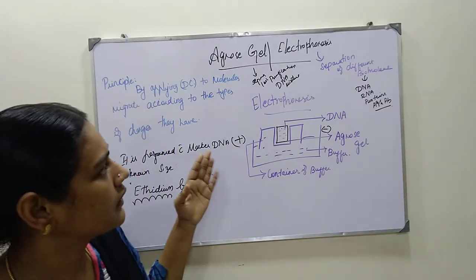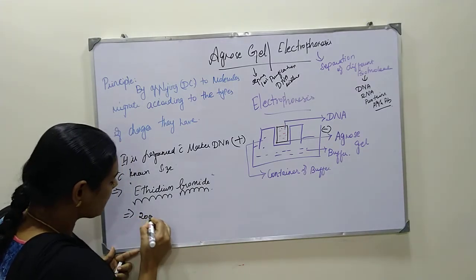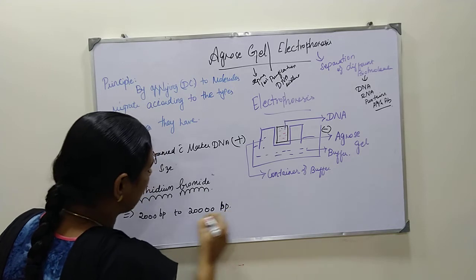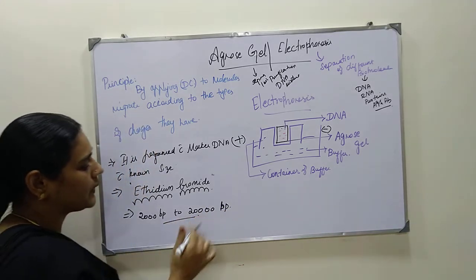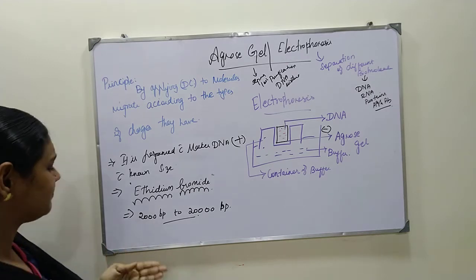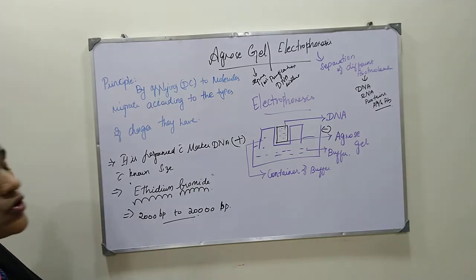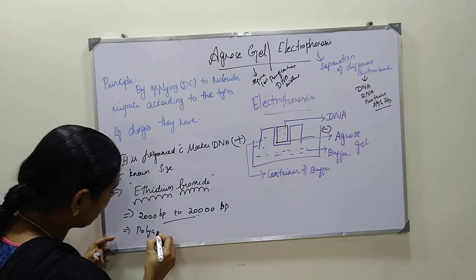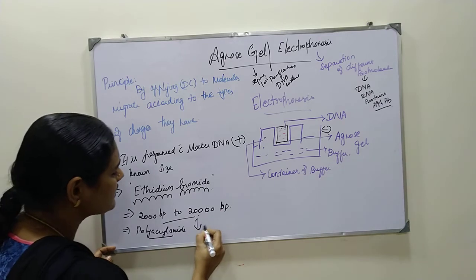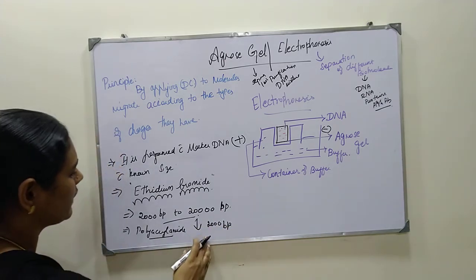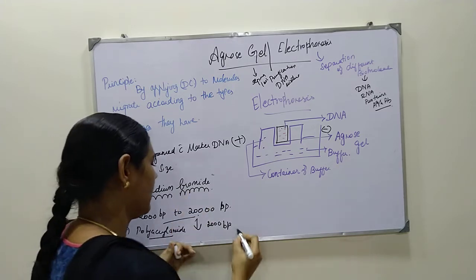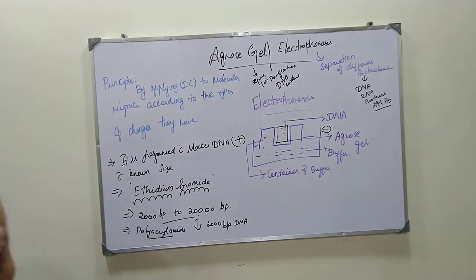This agarose gel electrophoresis technique is used to separate DNA from 2000 base pairs to 20,000 base pairs. We can identify the DNA from the 2000 base pair range to the 20,000 base pair range using this method. If the DNA fragment is below 2000 base pairs, for that we will be using polyacrylamide gel. This polyacrylamide gel is used for DNA containing less than 2000 base pairs.